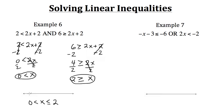To graph this on a number line, we plot both endpoints 0 and 2. X is greater than 0 but not equal, so an open circle at 0. X is less than or equal to 2, so a closed circle at 2. Shade in the region between them. This is how you graph inequalities with an AND statement.